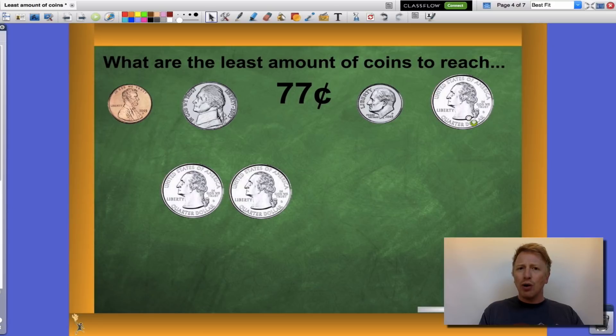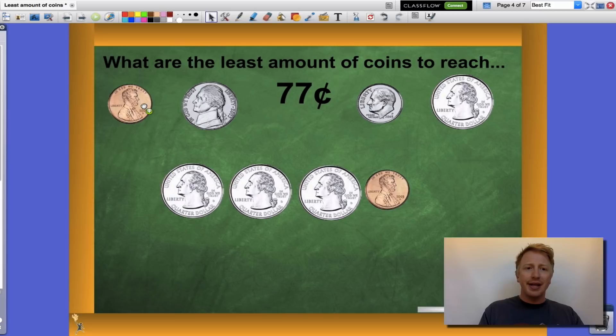Can I fit in one more quarter? You know it. Three quarters will get us to seventy-five cents. I sure can. That puts me only two away from my goal of getting to seventy-seven cents. Again, I'm gonna use my good old penny to get me the rest of the way. One and two. Three quarters and two pennies is the least amount of coins I can use to get to seventy-seven cents.